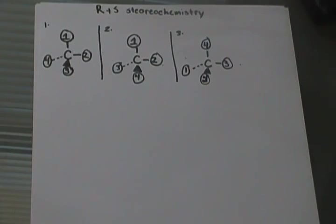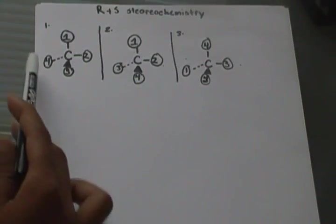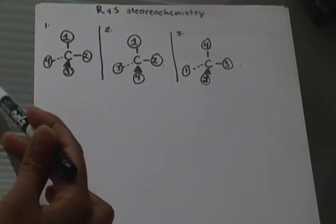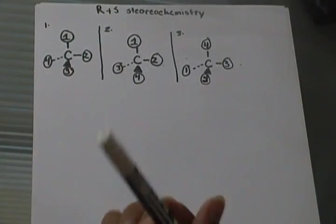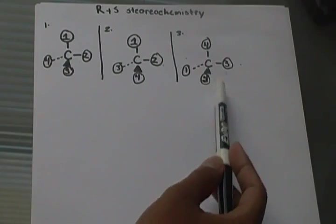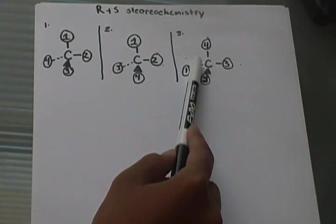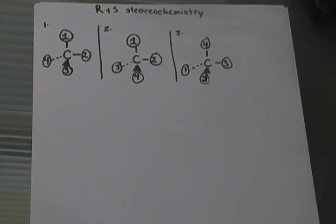You'll only come across three different types of problems, and it all depends on the fourth group. In the first example, the fourth group is going back into the page, as indicated by the dashed line. In the second one, the fourth group is coming out of the page, indicated by the wedge. And in the third type, the fourth group is going into the plane, indicated by a straight line. Those are the three types — it's either going to be coming out, going in, or in the plane as regards to the fourth group.